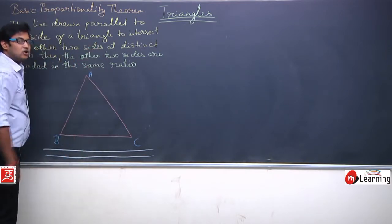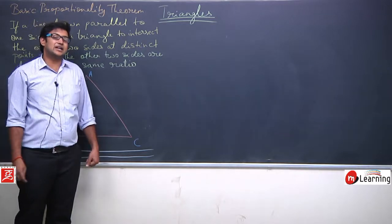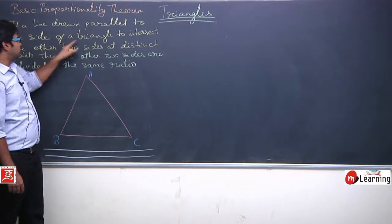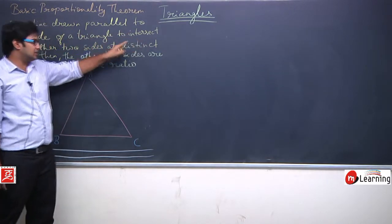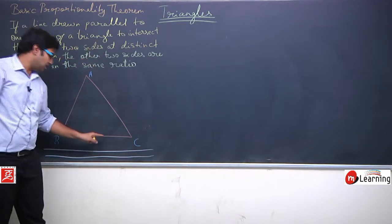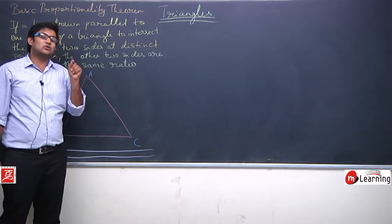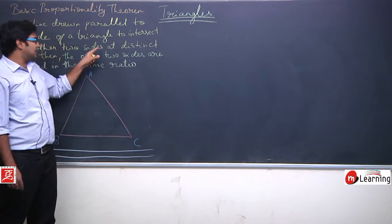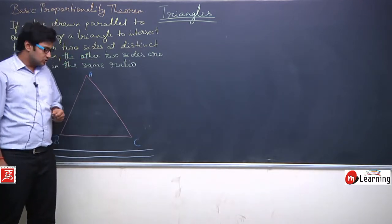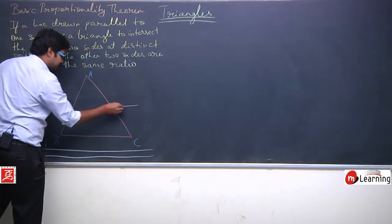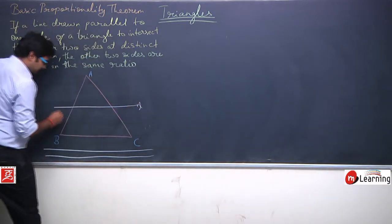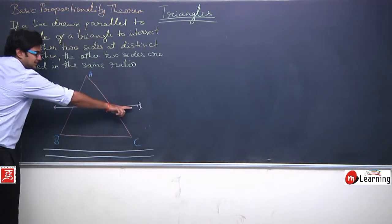But we need to consider the line drawn parallel to one side of the triangle that intersects the other two sides. From those parallel lines, we need to choose one which is intersecting the other two sides. I can choose a line like this — let us say line L.